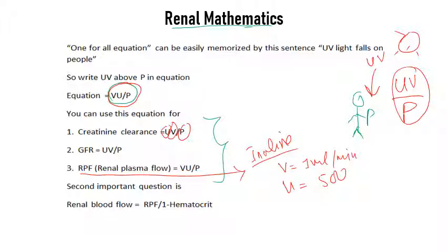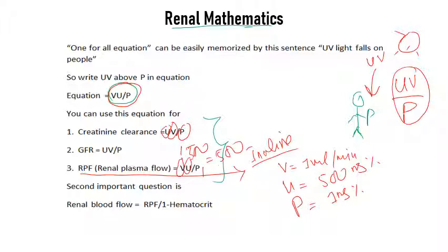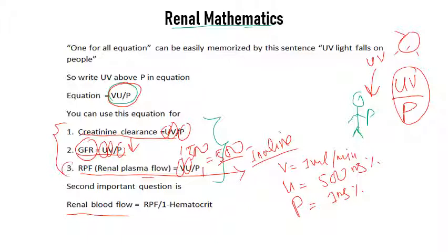Applying the clearance formula — C = (U × V) / P — substituting: V = 1, U = 500, P = 1, the answer is 500. Wait — using corrected standard values, the clearance comes out to 5, which gives the renal plasma flow. If you use the same formula with creatinine values, you get GFR. Creatinine clearance is almost similar to GFR. For these three equations — clearance, GFR, renal plasma flow — exam questions give simple values to plug in. If renal blood flow is asked, first calculate renal plasma flow, then use the given hematocrit value to calculate blood flow.